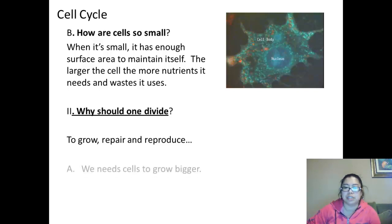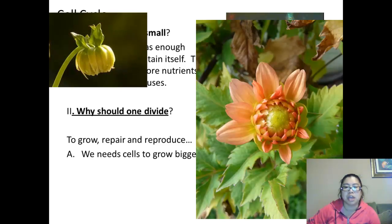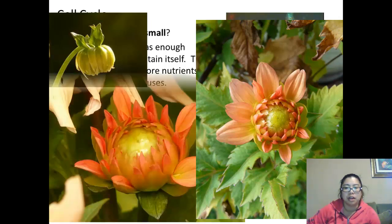We need cells to grow bigger. Similar to this orange dahlia, when it blooms, the leaves and petals will need more cells to grow bigger and bigger.